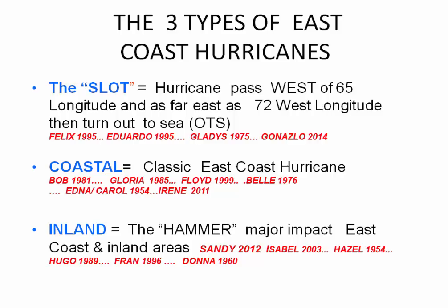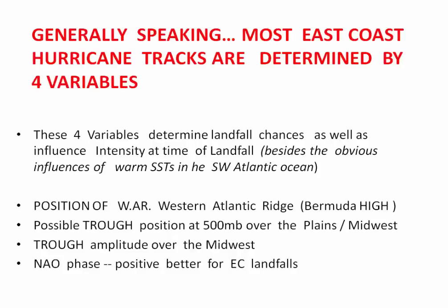The second type is the coastal hurricane — the classic East Coast hurricane. We just had one with Michael in some ways. Examples include Bob 1991, Gloria 1985, Floyd 1999, Bell 1976, Edna and Carol 1954, and Hurricane Irene. The third type is the inland hurricane, which has a major impact on the East Coast and inland areas. Classic examples are Sandy 2012, Isabel 2003, Hazel 1954, Hugo 1989, Fran 1996, and Donna 1960.